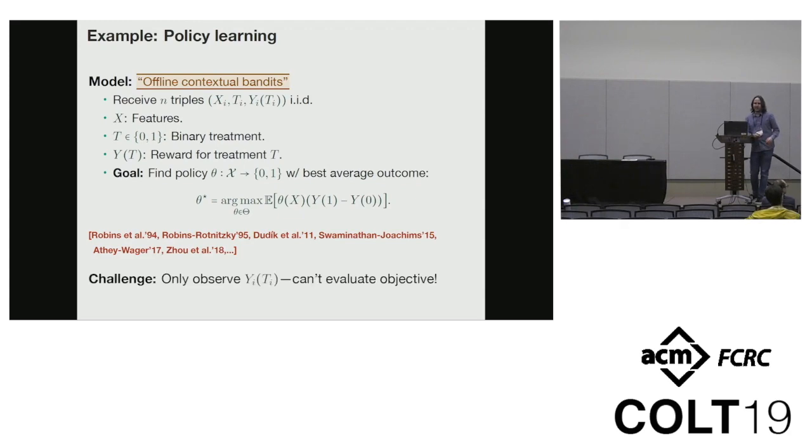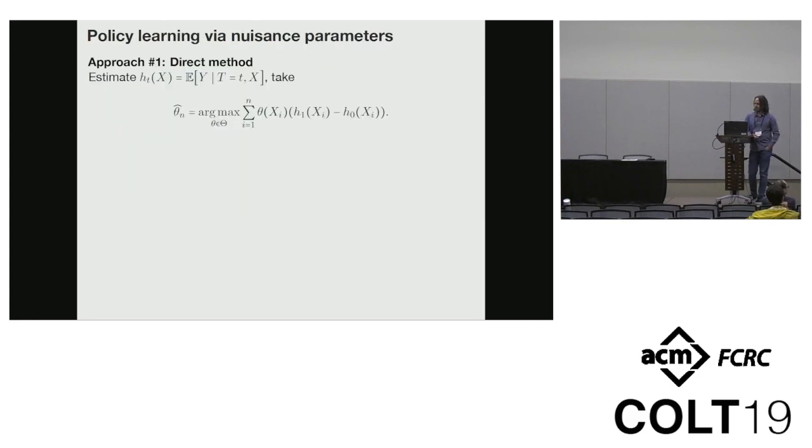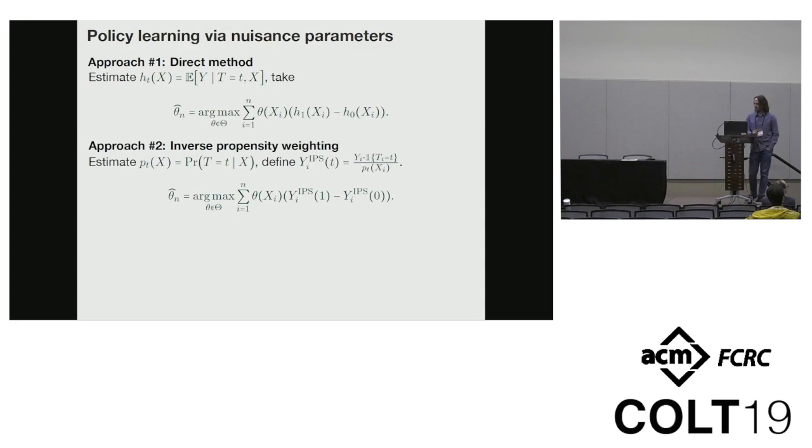The challenge is that because I only saw the reward for the treatment that was taken, I can't just evaluate the sample version of this objective directly. There are a few approaches to getting around this. The first is called the direct method, which estimates the conditional mean of the rewards for each treatment and plugs this in as an estimate. That has high bias, but you can also do inverse propensity weighting. This estimates the conditional probabilities for each treatment. This is a purely observational setting - we don't know how the treatments were generated, but we can estimate these probabilities and use these to come up with an unbiased estimator for the loss. This gives low bias but high variance.